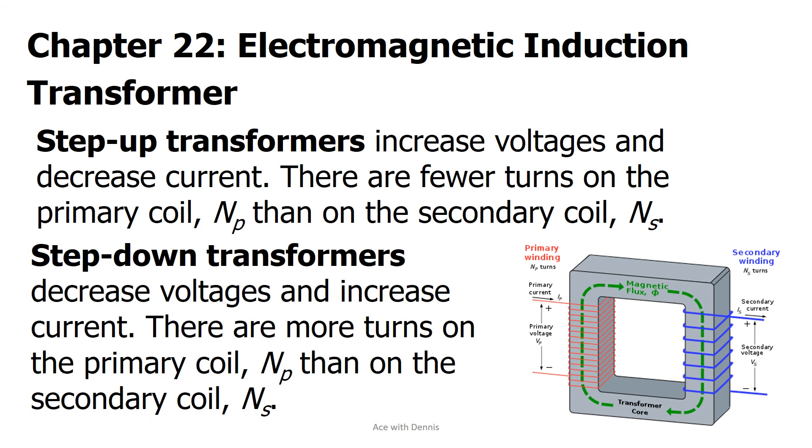Step-down transformers decrease voltages and increase current. There are more turns on the primary coil, Np, than on the secondary coil, Ns.